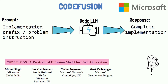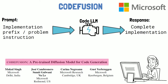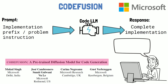As humans, when we write code we often reach a point where we decide to start writing some piece of code from scratch. However, during the generation of the complete implementation by a code LLM, the model has one chance to get the implementation right. In other words, the model has no easy way to reconsider tokens it already generated.